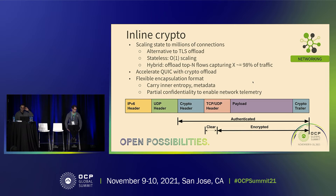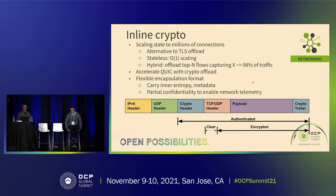Inline crypto is another example. We all like TLS, but it's not necessarily very offload-friendly. If you have a single server handling millions of connections, TLS offload or existing ways of doing cryptography don't necessarily scale. We have a custom crypto protocol that Google deploys internally that has O(1) scaling. That's not necessarily possible in every hardware implementation, so maybe we need some kind of hybrid that keeps top-hitting flows in NIC memory and falls back to the host for others.